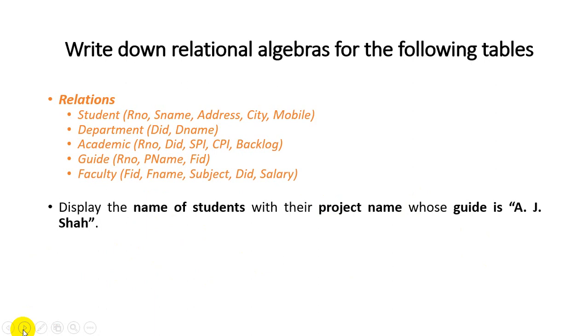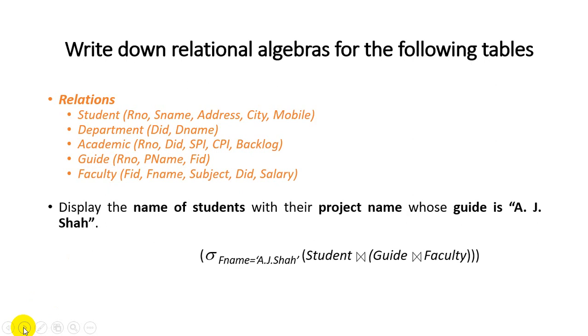Another example: display name of student with their project name whose guide is A.J. Shah. The user wants the student name from the student table and professor name from the faculty table, filtered by a specific guide. For this we require the student table, guide table, and faculty table. We write the relational algebra: first select where faculty name equals 'A.J. Shah' using natural join, then project student name and project name.